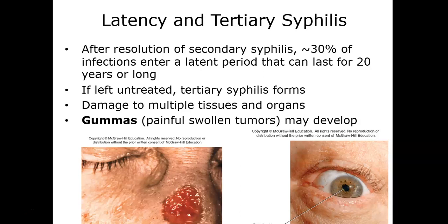We can then go into tertiary syphilis, where most of the irreversible damage from the disease occurs if left untreated. About 30% of all infections will enter a latent period that can last up to 20 years. The tertiary form creates rubbery masses on the tissues known as gummas, which have a plasticky-looking appearance to them.